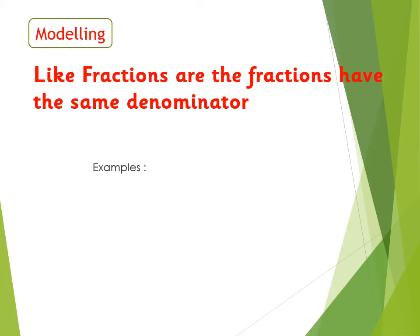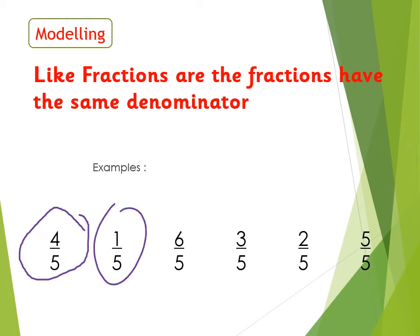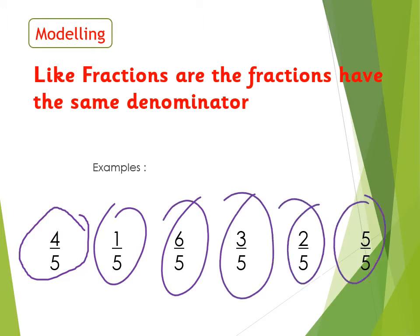First we need to know what like fractions are. Like fractions are fractions that have the same denominator. Before we covered unit fractions and non-unit fractions. Here, like fractions are fractions that have the same denominator. You can see the examples — the denominator is the same, five, for all the fractions. If the denominator is the same for all the fractions, then those fractions are called like fractions.